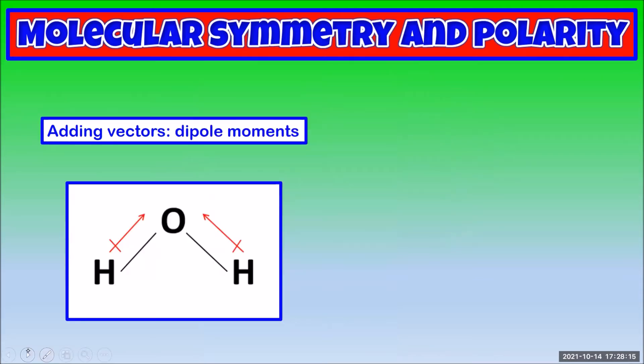Let's apply this same idea to the polar bonds in a molecule. In water, the bonds are polar. We can show these dipoles with vectors. Charge vectors are usually drawn pointing toward the negative end. Let's add these vectors using our tip-to-tail method.